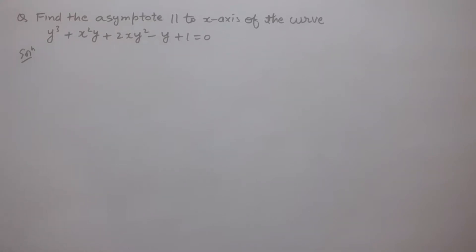Students, in this question we have to find the asymptote parallel to the x-axis of the curve y³ + 2xy² - y + 1 = 0. We know that the asymptote parallel to the x-axis can be obtained by equating the coefficient of the highest power of x equal to 0, and we get the asymptote parallel to the x-axis.